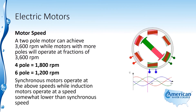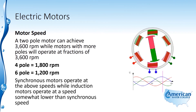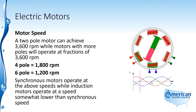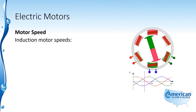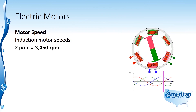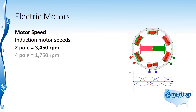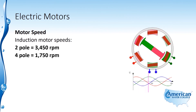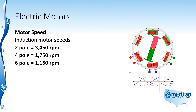Synchronous motors operate at the above speeds, while induction motors operate at a speed somewhat lower than synchronous speed. Induction motor speeds are approximately: two-pole at about 3450 RPM, four-pole at about 1750 RPM, and six-pole at about 1150 RPM.